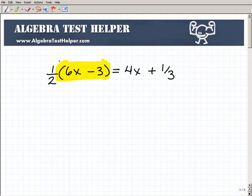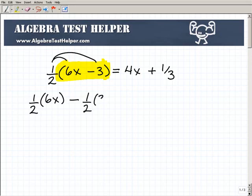So right here, I'm going to distribute the 1 half to the 6x and minus 3. So that's going to be 1 half times 6x. I'm going to write this out in a long manner just to make my point here. So it's 1 half times 6x minus 1 half times 3 equals 4x plus 1 third.